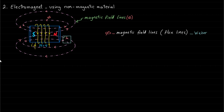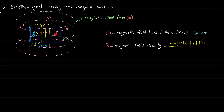If we take a certain area A at the space close to the electromagnet and calculate the number of magnetic field lines entering this area, the result gives a new variable called magnetic field density, denoted by the letter B. The magnetic field density equals the magnetic field lines over the area A. So the more lines enter this area, the higher the magnetic field density. The unit of magnetic field density is Weber per square meter, or Tesla.